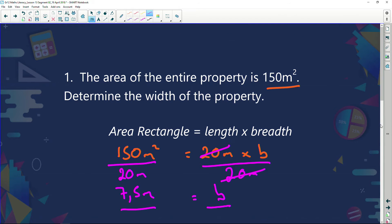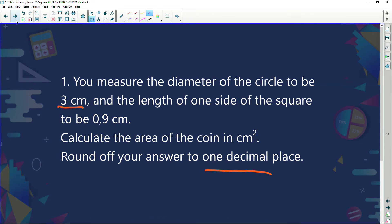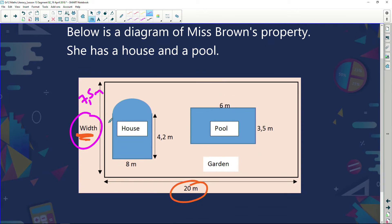Right. Now, my next question says this. Miss Brown wants to plant new grass in her garden. Grass costs 20 rand per square meter. Will 1,500 rand be enough to cover her garden with new grass? So Miss Brown has got this house. She's got the pool and she's got fenced off her whole yard. And what she wants to do is plant grass. So let's go back and look at this diagram. So here it is, her house, her pool, and all this area here in the fence. She wants to plant with grass. And we need to know, will she have enough money? Because she's just got 1,500 rand. And will that be enough money to plant all the grass?